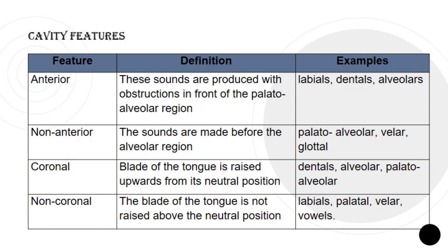Cavity features. Anterior: these sounds are produced with obstructions in front of the palatoalveolar region, and examples for anteriors are labials, dentals, and alveolars. Non-anterior: these sounds are made before the alveolar region, and examples are palatoalveolar, velar, and glottal. Coronal: the blade of the tongue is raised upwards from a neutral position, and examples are dentals, alveolar, and palatoalveolar.